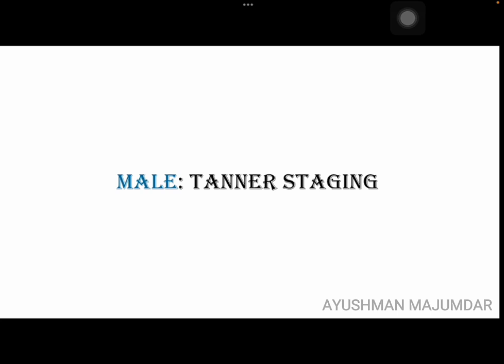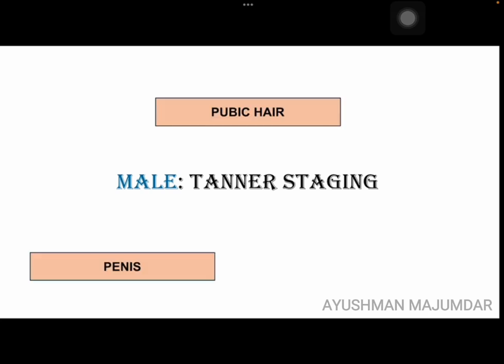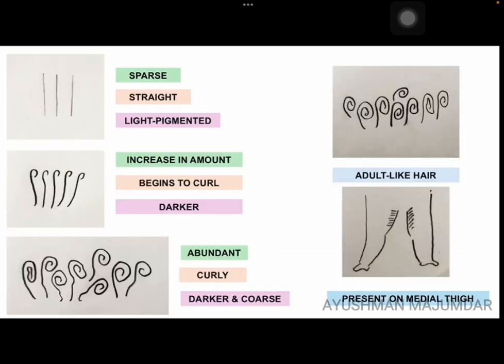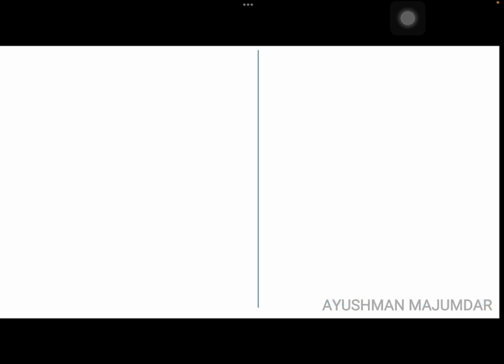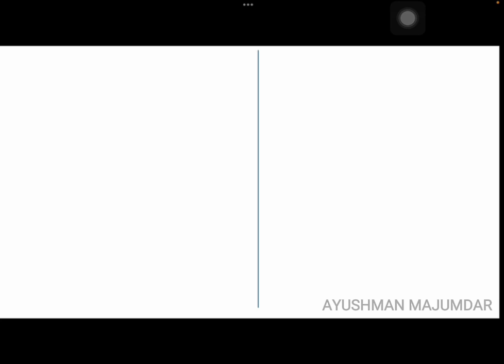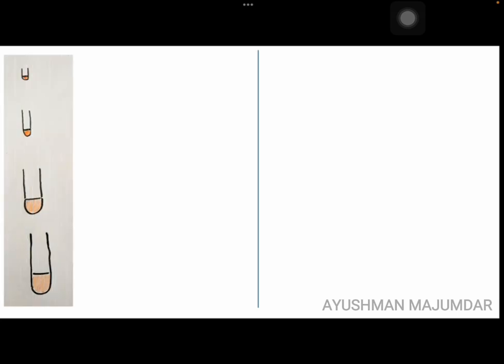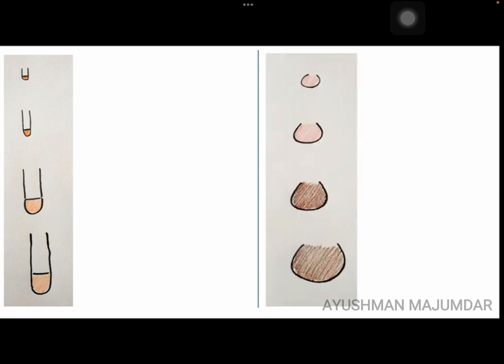Coming to males, Tanner staging in males consists of three parameters: pubic hair, penis, and testis. The pubic hair development or staging is exactly the same as that in females. For the other two parameters, let's divide it into two parts — this is the schematic representation of the development of penis, and this is of the testis and scrotum.